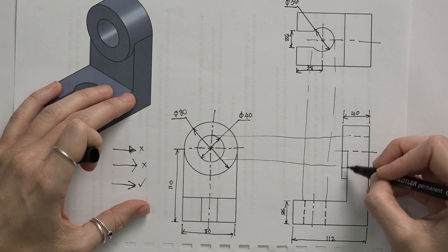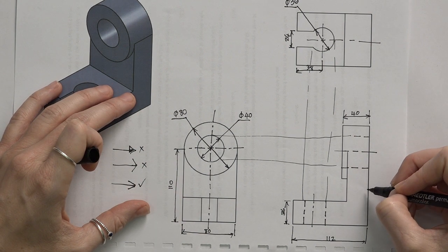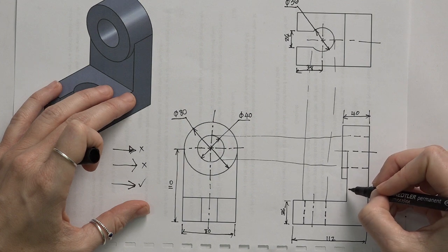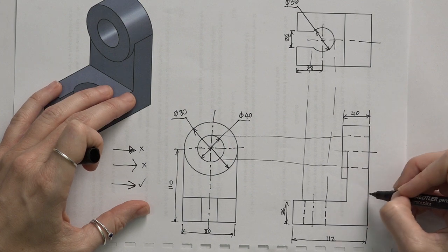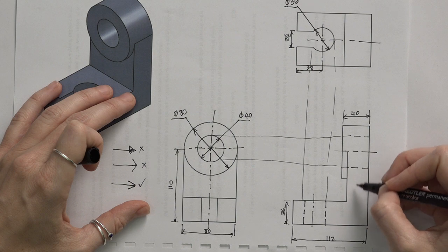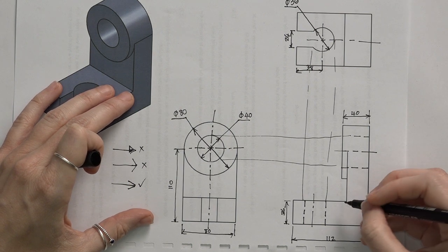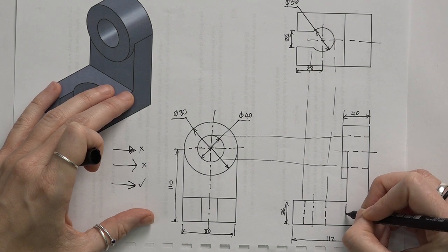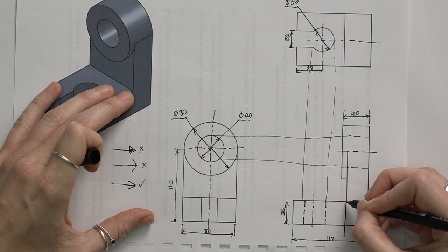Now, if we for example wanted to dimension this piece of the component, remember we prefer not to dimension them on the component and rather outside of the component. Now, if we extend from here, we have to draw this extension line all the way from where we are.